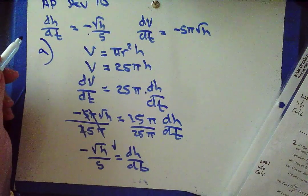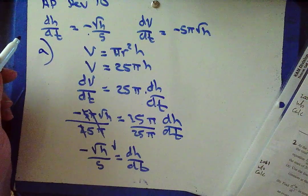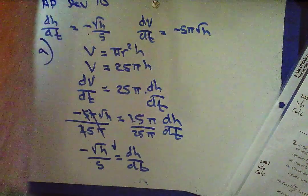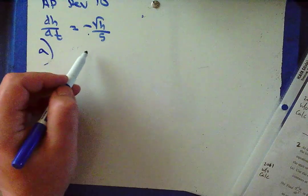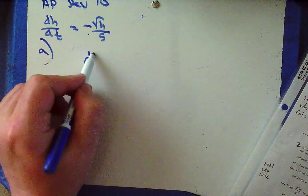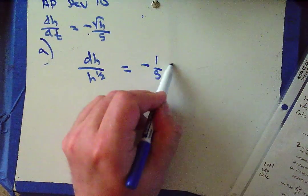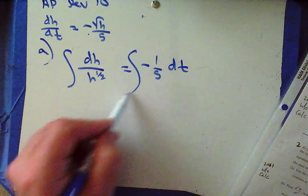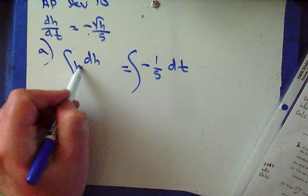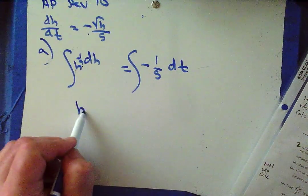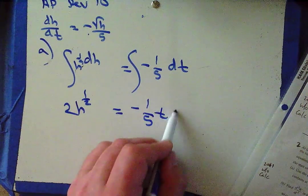What about part b? Given that h equals 17 at time equal to 0, solve this differential equation. So we've got dh/dt and they would like us to solve it. I'm going to have dh over h^(1/2) equals negative 1/5 dt, and I'm going to integrate. This is the same as h to the negative one half.